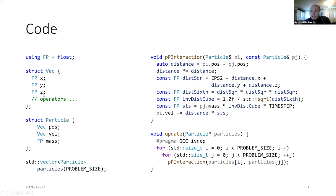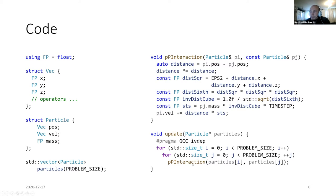Then we have a vector with three floats: x, y, and z. We have a particle that consists of a position vector (x, y, z), a velocity vector (x, y, z), and a float called mass. So this particle consists of seven floats. For the base version, we create a std::vector of those particles and allocate 'problem_size' many of them — in most benchmarks this is around 16,000 or 64,000. On the right side at the bottom, we have the update routine with two nested loops that iterate over all particle pairs and call pp_interaction.